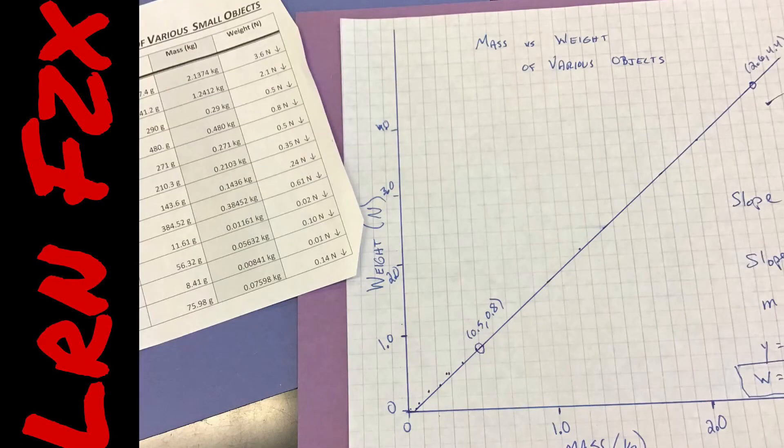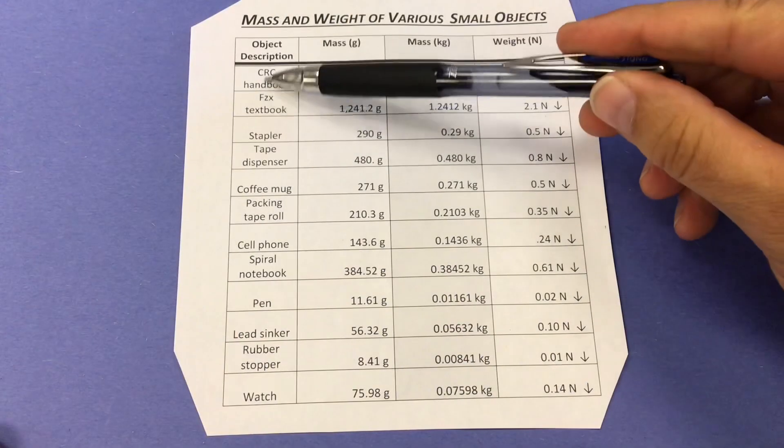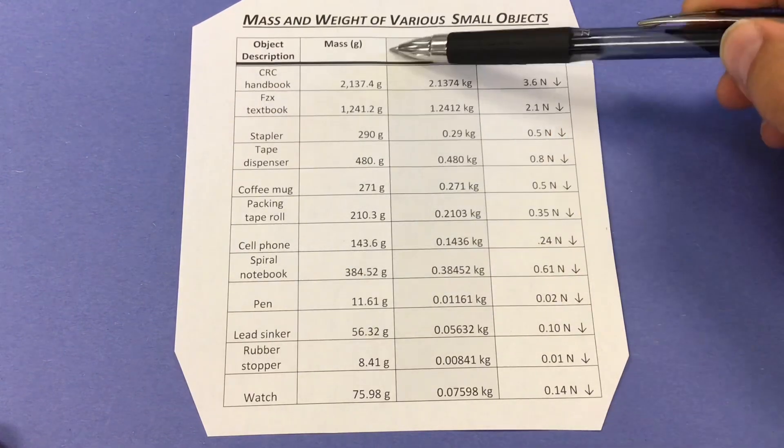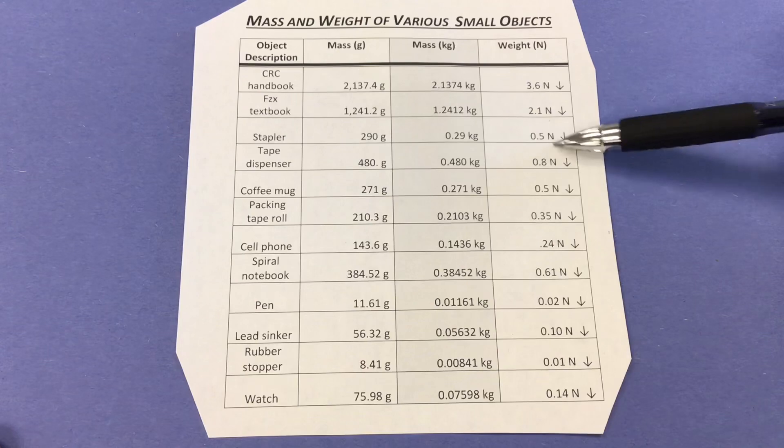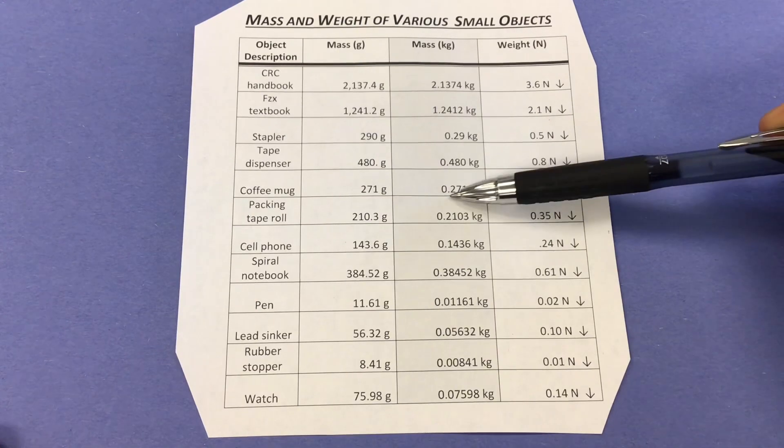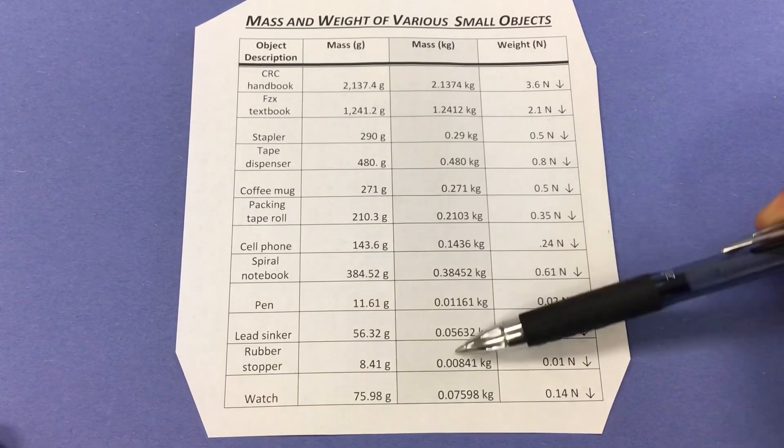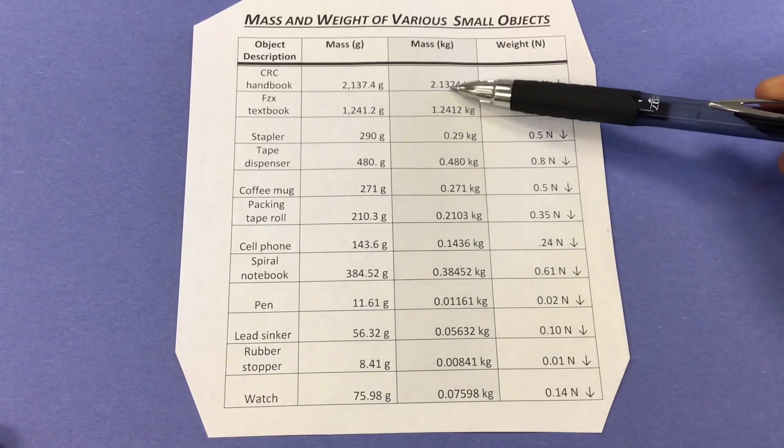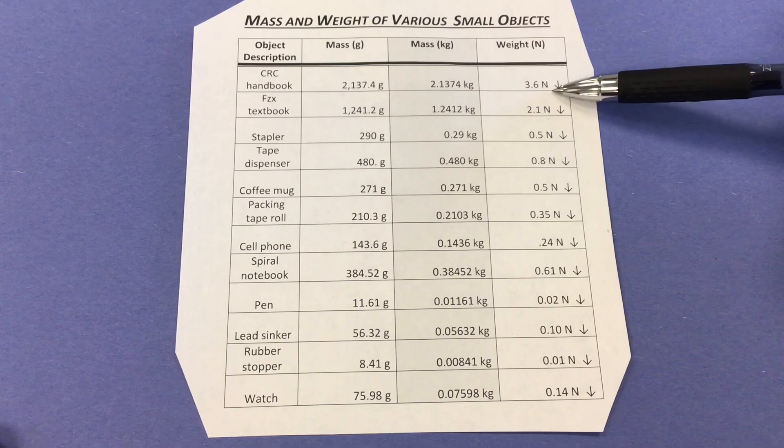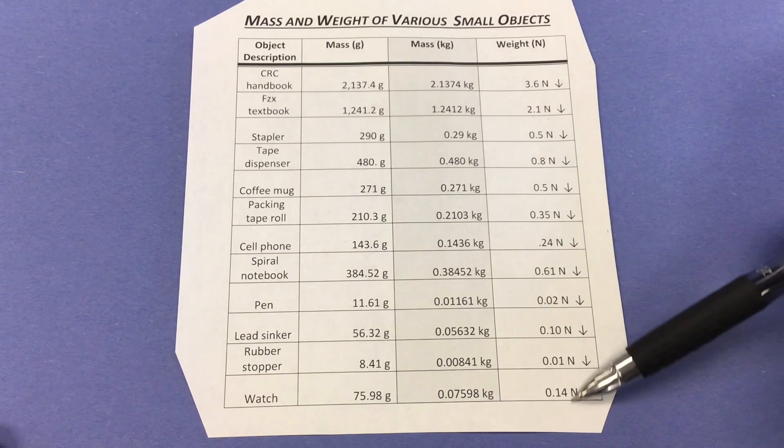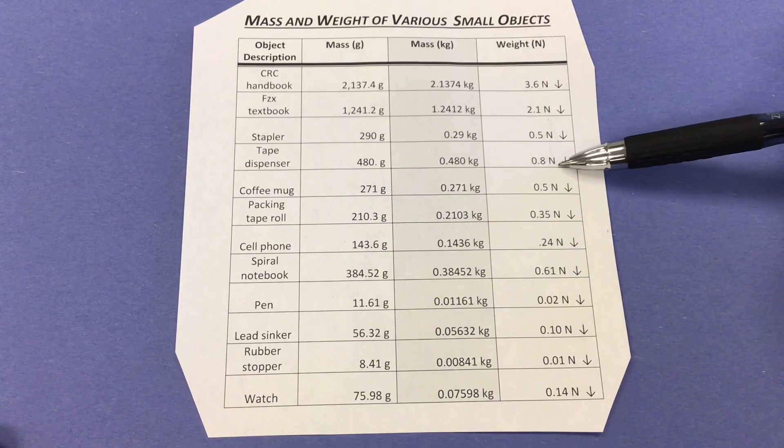Graphing data properly on paper and finding the relationship between two variables. Let's take a look at this data. The object description, the mass in grams, the mass in kilograms which we're going to use in the graph, and the weight in newtons. Notice that the mass does not have a direction. It's the quantity of matter or the resistance to acceleration, the inertia of an object, kilograms. And the weight is in newtons, and this does have a direction. As with every other force, the vector force is down. The weight is down.